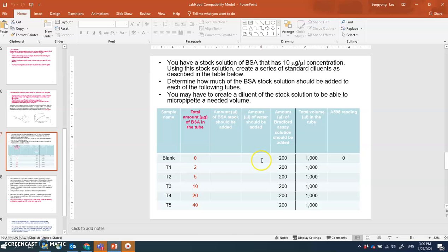You will add a certain amount of water to get about 800 microliters total volume made. Once you have 800 microliters, to each tube you will add 200 microliters of the Bradford dye solution, so the total volume in each tube will be 1000 microliters.